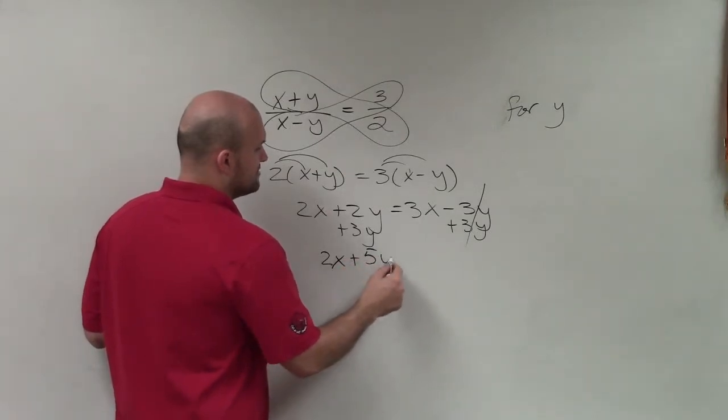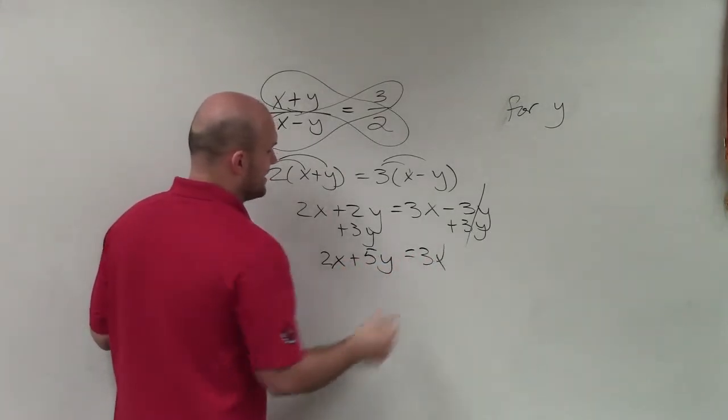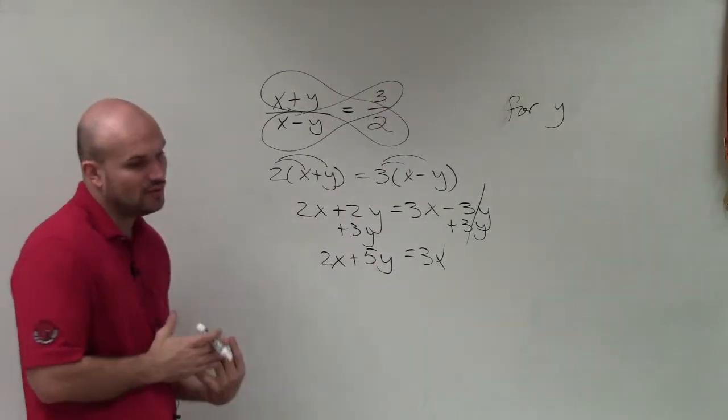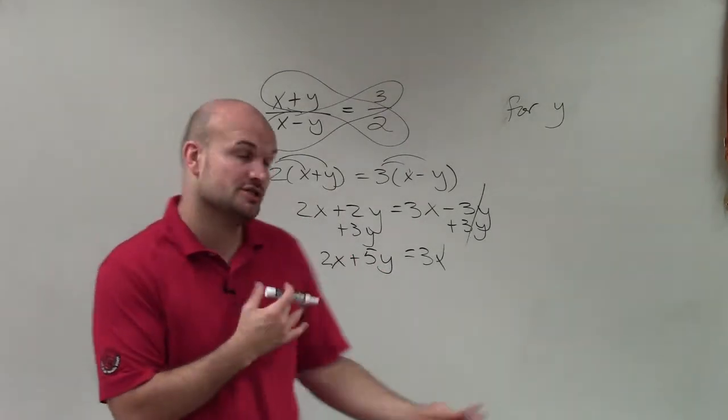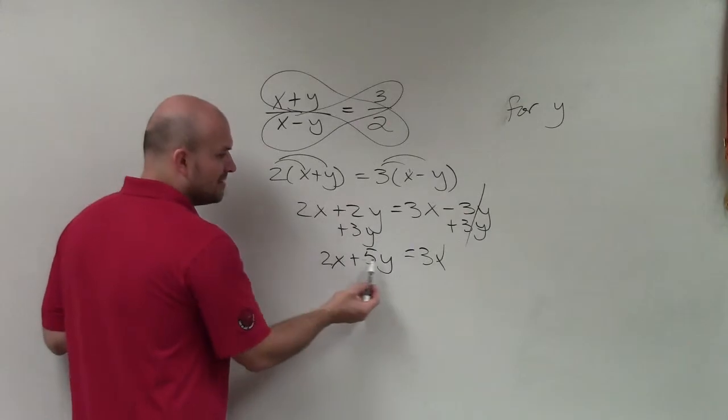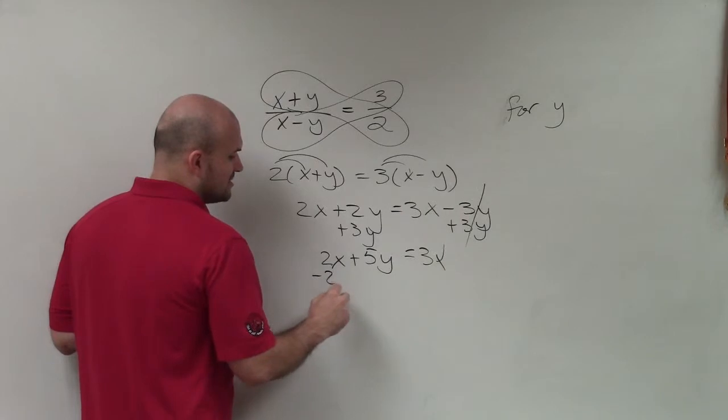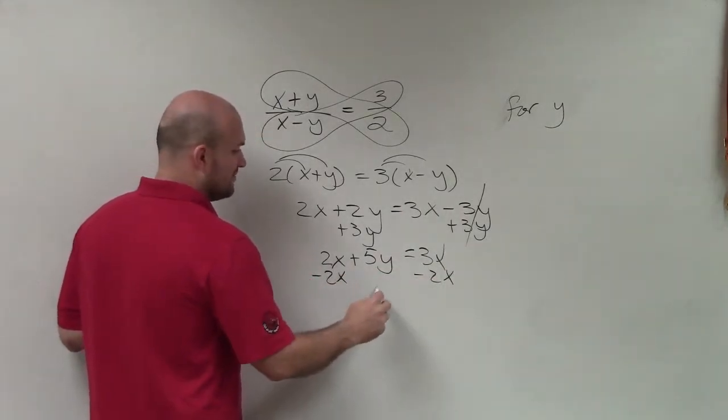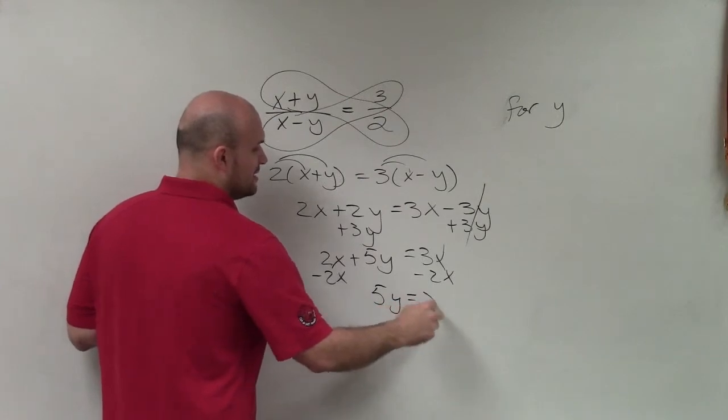Now I just need to isolate the y. So I need to undo what's happening to the y. And we always undo addition and subtraction first. I see that my 5y is being added by a positive 2x. So I'm going to subtract the 2x on both sides. These are like terms so I can simplify. So now I have 5y equals x.